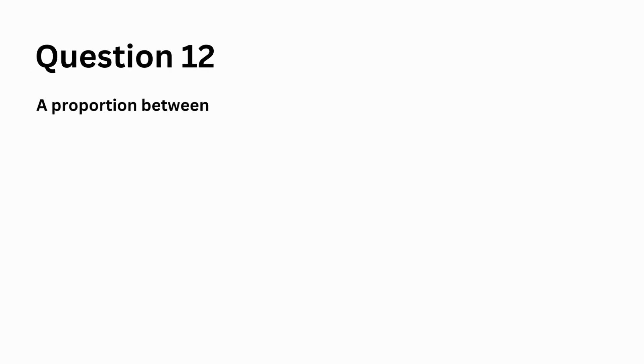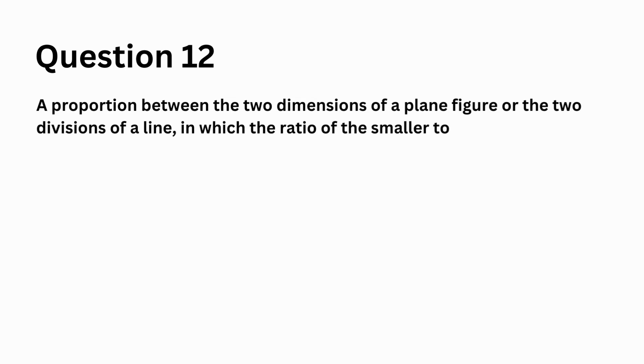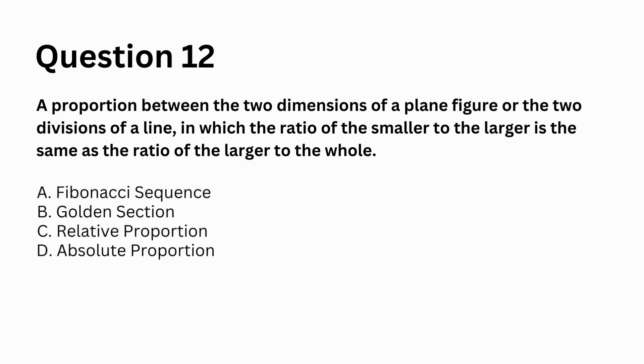A proportion between the two dimensions of a plane figure or the two divisions of a line in which the ratio of the smaller to the larger is the same as the ratio of the larger to the whole. A. fibonacci sequence, B. golden section, C. relative proportion, D. absolute proportion. Answer: B. golden section.